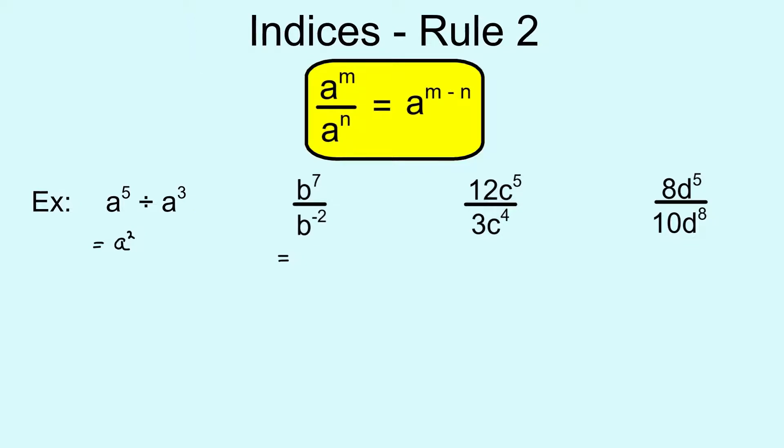If we look at the second example using a similar way, this one's written as a fraction. A bit more care here because we've got this negative power on the bottom line, so we're doing 7 take away negative 2. That's a double negative coming into play, which means 7 plus 2. So the base is b this time, but 7 minus minus 2 gives b to the power 9.